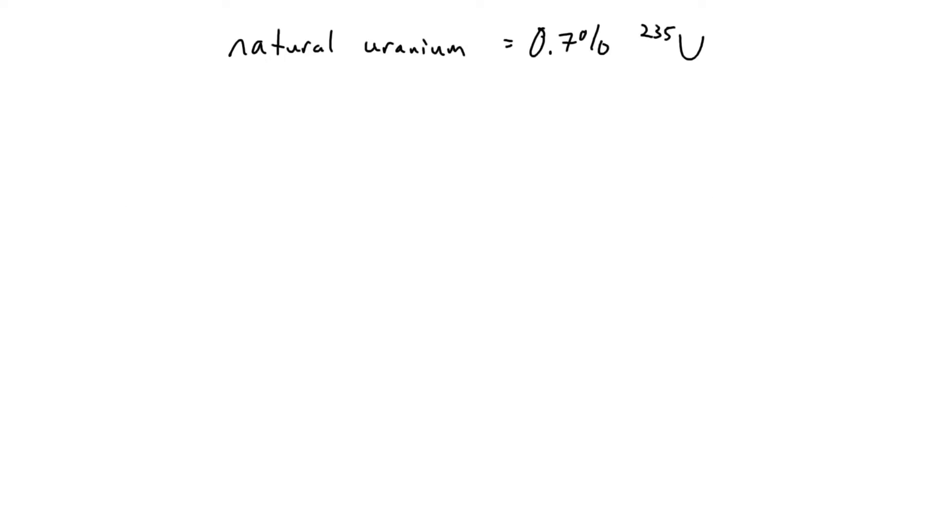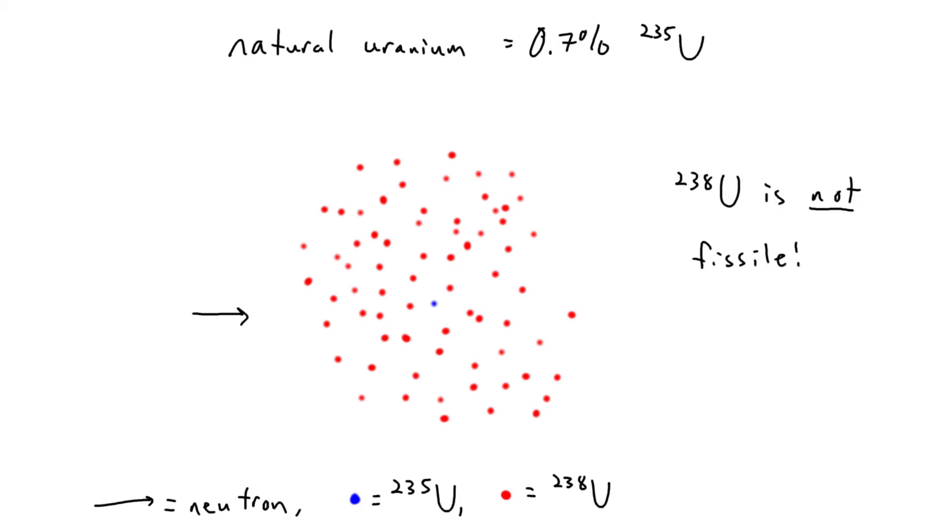For example, if we have unenriched natural uranium, which is only about 0.7% fissile U-235 by weight, any neutrons from fission will have a hard time finding other atoms of U-235 to fission, among all those U-238 atoms. This is a problem because U-238 is not fissile. It will absorb our neutrons, but not fission.